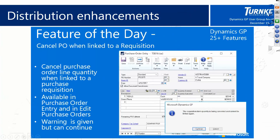For those using requisitions: when you create a requisition in GP and link it to a purchase order — generate the PO from it — you get that link connecting the requisition to the PO, similar to linking a PO from a sales transaction. One deficiency was that it would not allow you to delete or cancel that PO line if it was linked to the requisition. Now you can cancel those things — it will warn you as you move through the process of canceling a quantity for that line, but you can now do it.